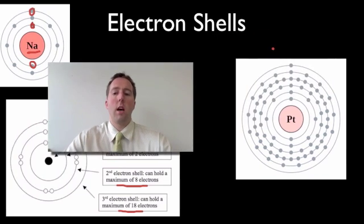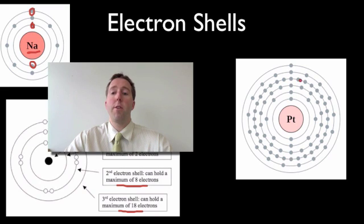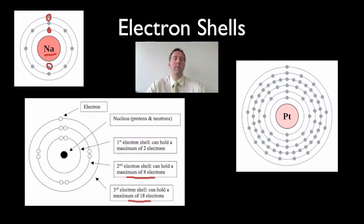Here is an atom of plutonium — a similar arrangement but with far more electrons. Again, two in the first shell, the second shell can only hold eight, the third shell can only hold 18, and the fourth shell can hold 32, and it goes on from there. Electrons exist in electron shells or energy levels, and each shell can only hold a maximum number of electrons: two in the first, eight in the second, and 18 in the third.